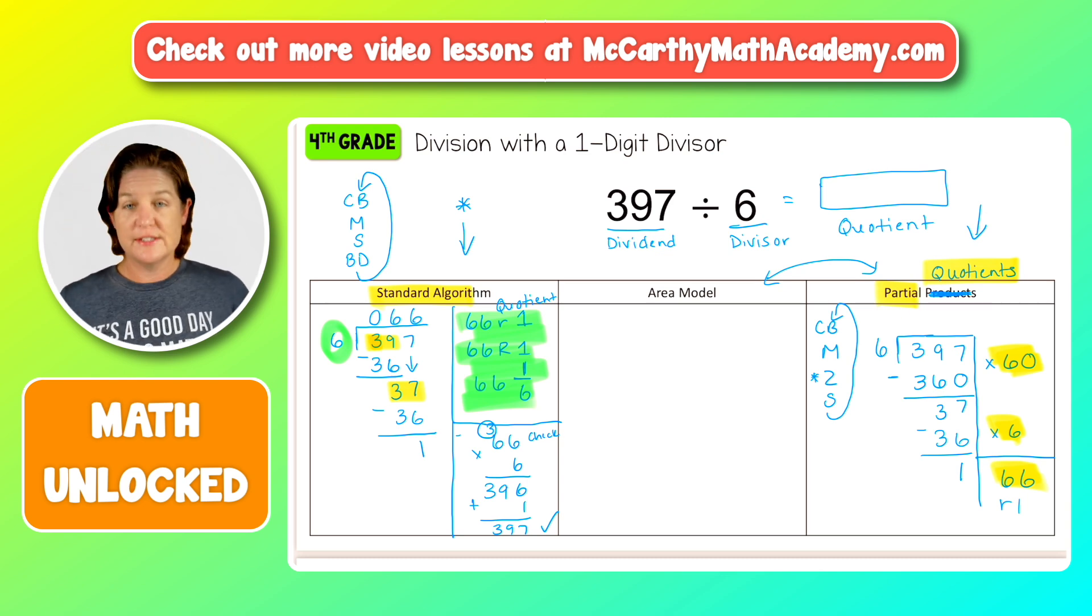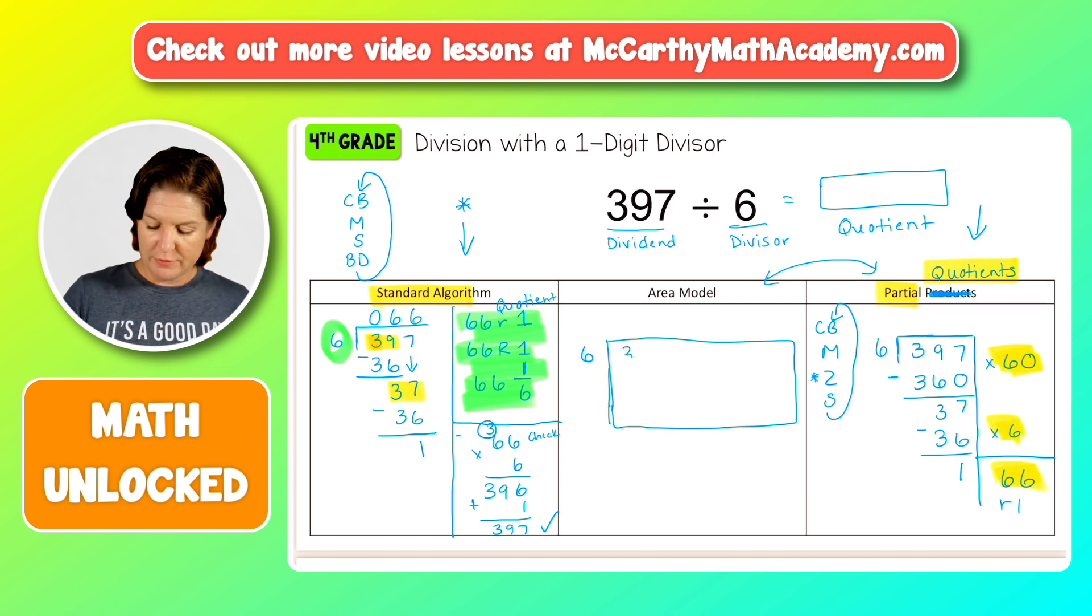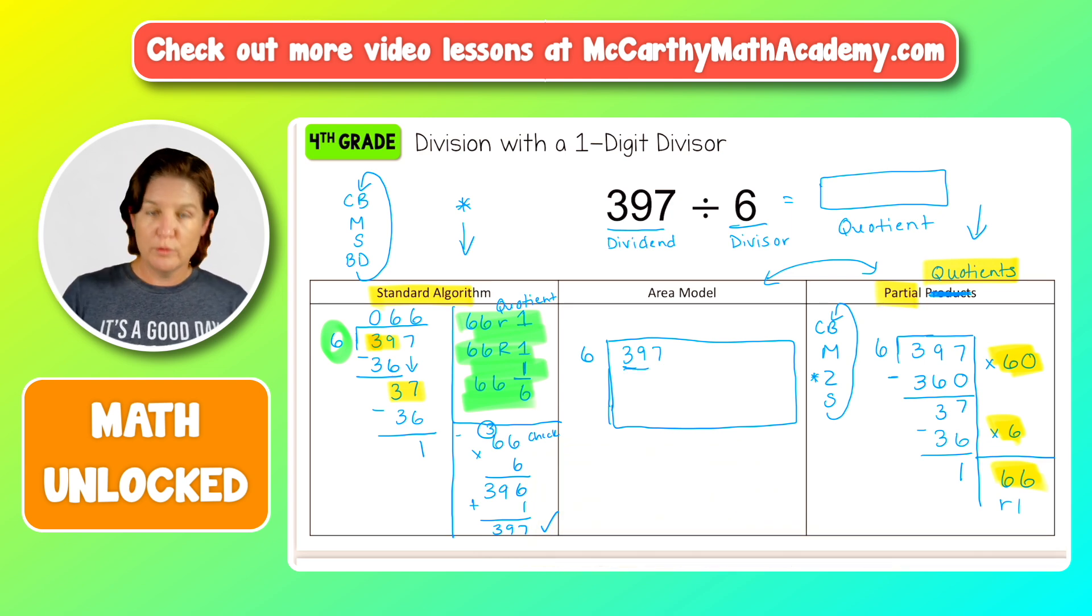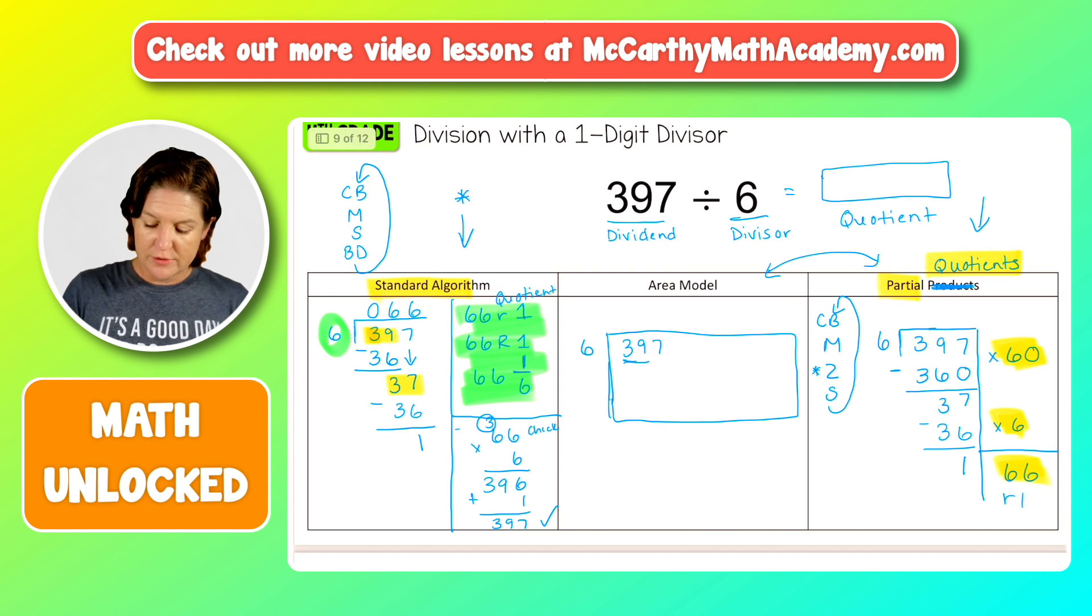Now same steps as the partial quotients. It looks like we're just kind of flipping it into a rectangle. Okay. We have 397. Now we follow the same steps as in partial quotient. We count by. So how many times does six go into three? It doesn't. Into 39 would be six times. So we could say six times that would be 36, but we need a zero here. So six times 60 would give us that 360.